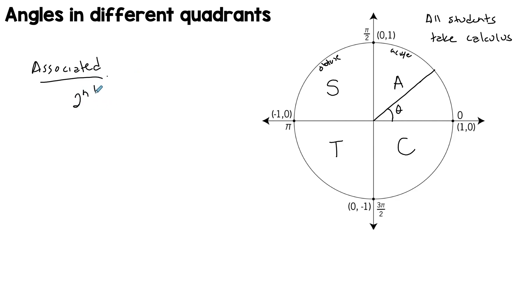If I have the acute angle, and I want to know what's the associated angle in the second quadrant, this associated angle has the same properties as this acute angle. It's another angle here that would have the same properties as this angle.